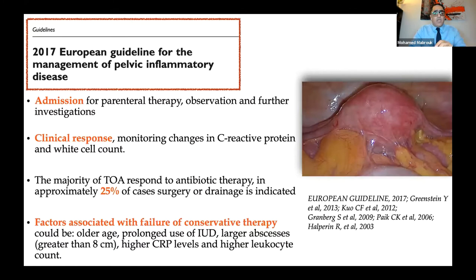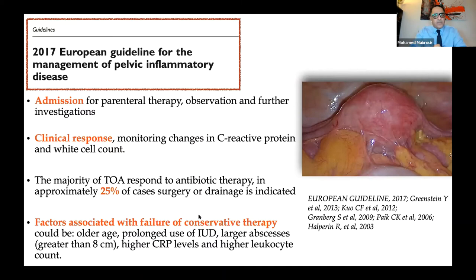About 25% of patients respond well to antibiotic therapy. According to the European guidelines, factors associated with failure of conservative treatment include older patient age — I recently operated a patient with a coil that had been in place for 11 years — abscess size greater than 8 cm, suspicion that medical treatment will not work, and a very high and rising CRP level. A low leucocyte count is less concerning.